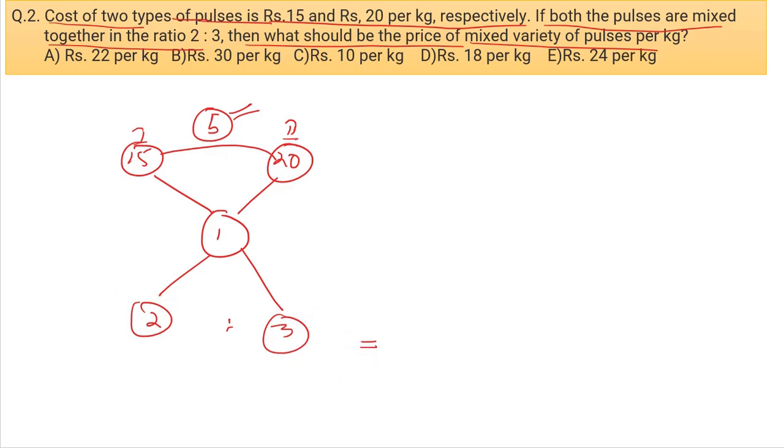The total is 90, and the mixture is 5 kg, so 90 divided by 5 equals Rs. 18 per kg. The answer is option D.